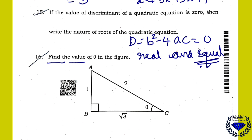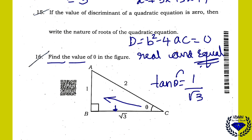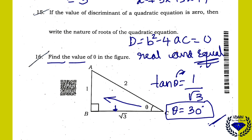Find the value of theta in the figure. Using tan θ = opposite/adjacent = 1/√3, the value of theta is 30°. Alternatively, you can use cos θ = √3/2 giving cos 30°, or sin θ = 1/2 giving sin 30°.